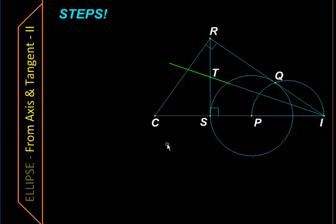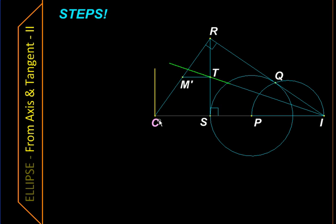C is going to be the center of the ellipse we are trying to find. If that is the center, we already have the semi-major axis. To find the semi-minor axis, I will project point T onto the radius — this gives the radius of the directing circle. Then I draw a perpendicular to the axis from the center, which is the general direction of the other axis, and draw an arc with C as center and Cm' as radius until it meets that direction. Let M be that point — CM will be our semi-minor axis. Knowing both axes, the ellipse can be drawn.